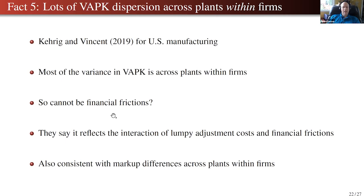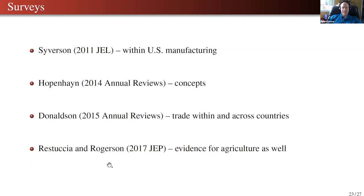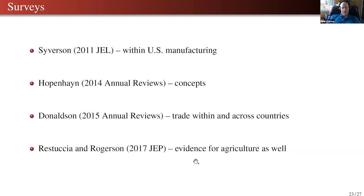Let me highlight one more area: Restuccia and Rogerson's survey emphasizes agriculture quite a bit. Agriculture is a much bigger sector than manufacturing for developing countries, and there's a lot of potential misallocation of inputs like labor across farms when there's imperfect ability to transfer land ownership. Chris Udry has pointed out measurement issues in the agricultural literature. This is a growing area with overlap between development economics and the misallocation literature.